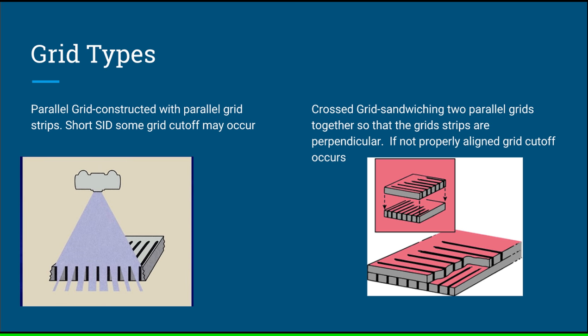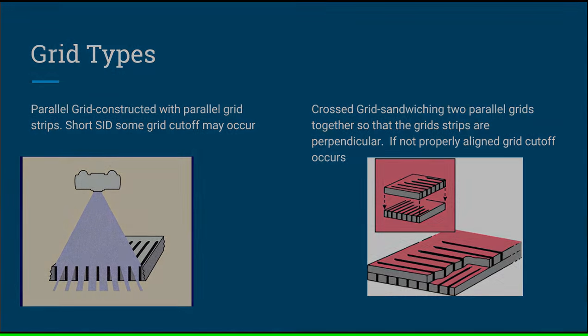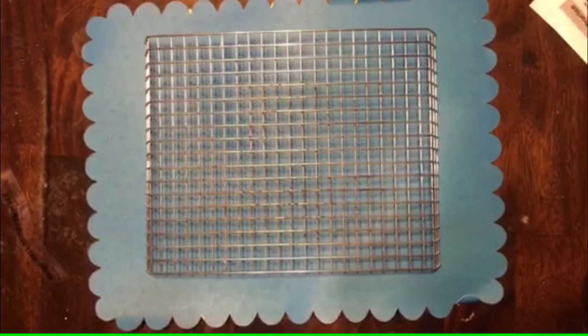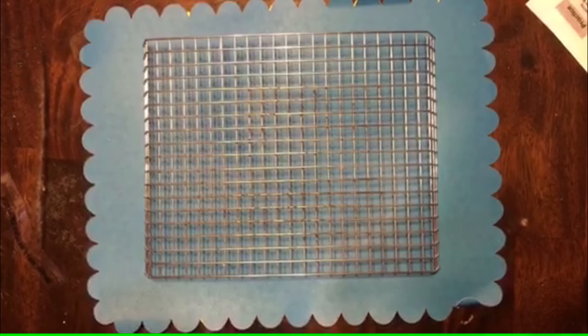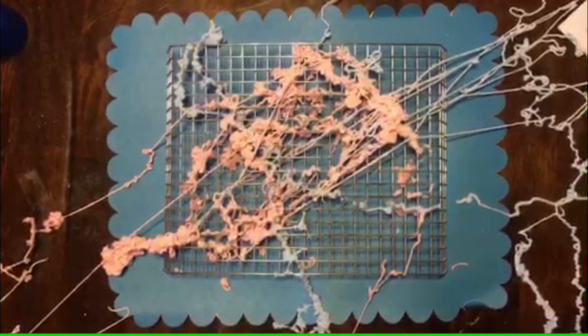Grid types: The parallel grid is constructed with parallel grid strips. With a short SID, some grid cutoff may occur. The cross grid is a sandwiching of two parallel grids together so that the grid strips are perpendicular; if not properly aligned, grid cutoff occurs as well. In this demonstration, the small cooling rack represents the radiographic grid. Notice how the grid only allows scatter radiation — represented by the silly string — to get through if it travels in the same angle as the holes of the rack, or the interspace material of a grid, while other scatter is prevented from going through by the radiopaque material of the grid strips.